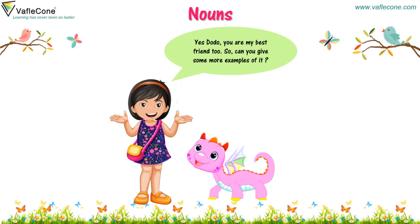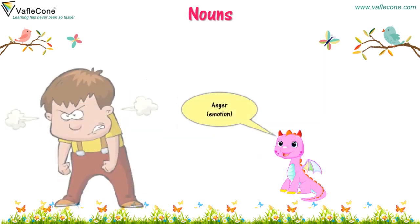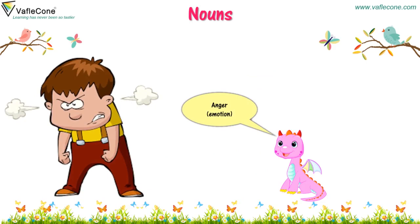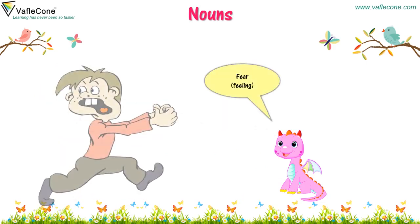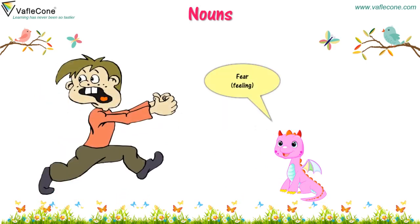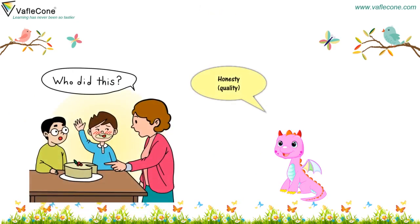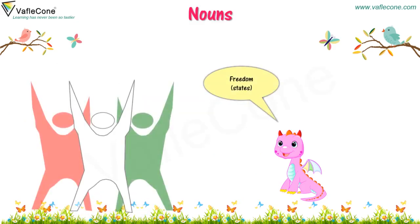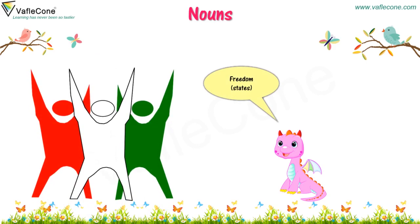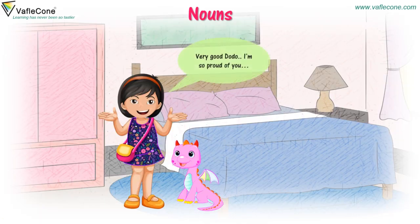So, can you give some more examples? Yes, Jiya, I can. Anger is an emotion. Fear is a feeling. Honesty is a quality. Freedom is a state. Very good, Dodo. I am so proud of you. Thank you, Jiya.